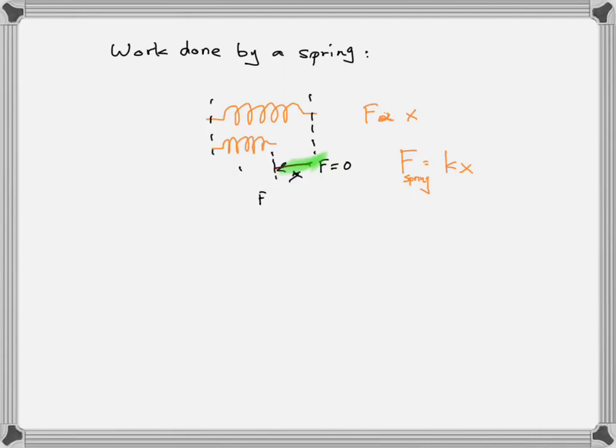That's the magnitude of the spring force. Now, what's the direction of the spring force? The force that the spring exerts — not the force that I'm exerting. The force that I'm exerting is to the left, and that's the direction of x. But the spring is exerting a force back — the spring is pushing back in the opposite direction of the displacement.